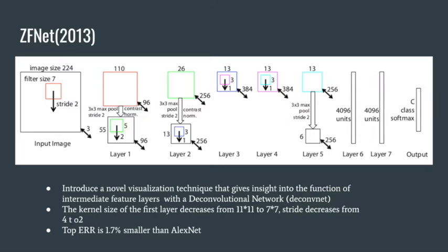To examine a given ConvNet activation, they set all other activations in the layer to zero and pass the feature maps as input to the attached deconvolutional layer.